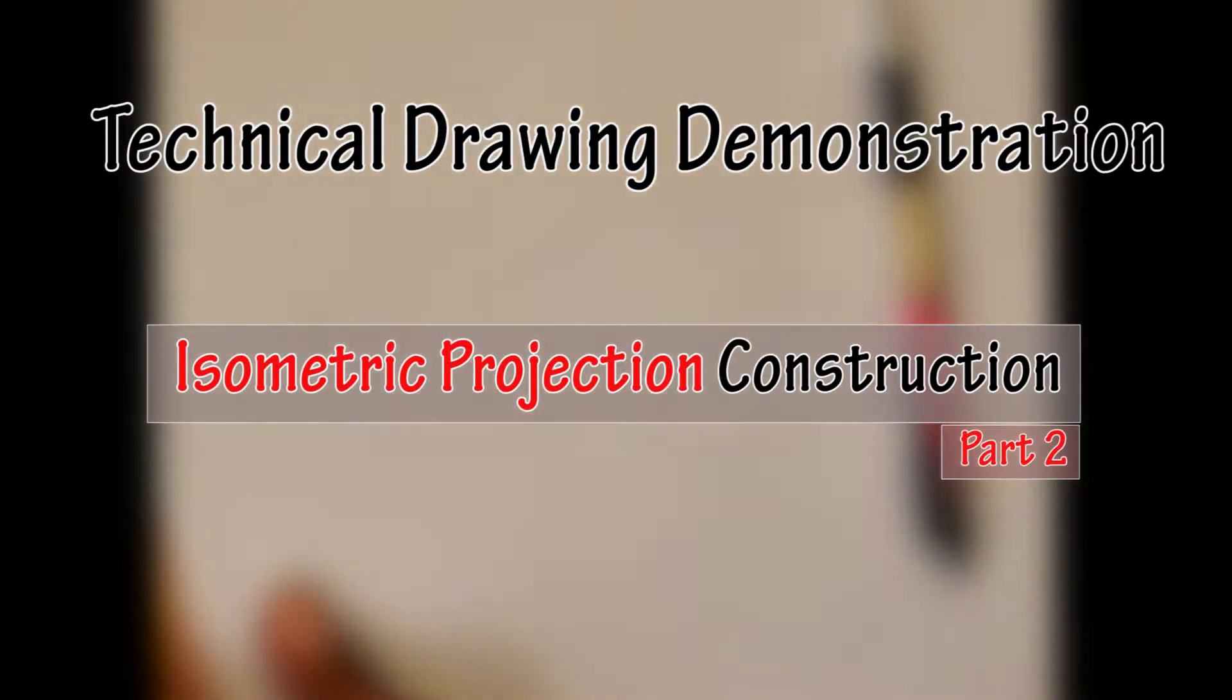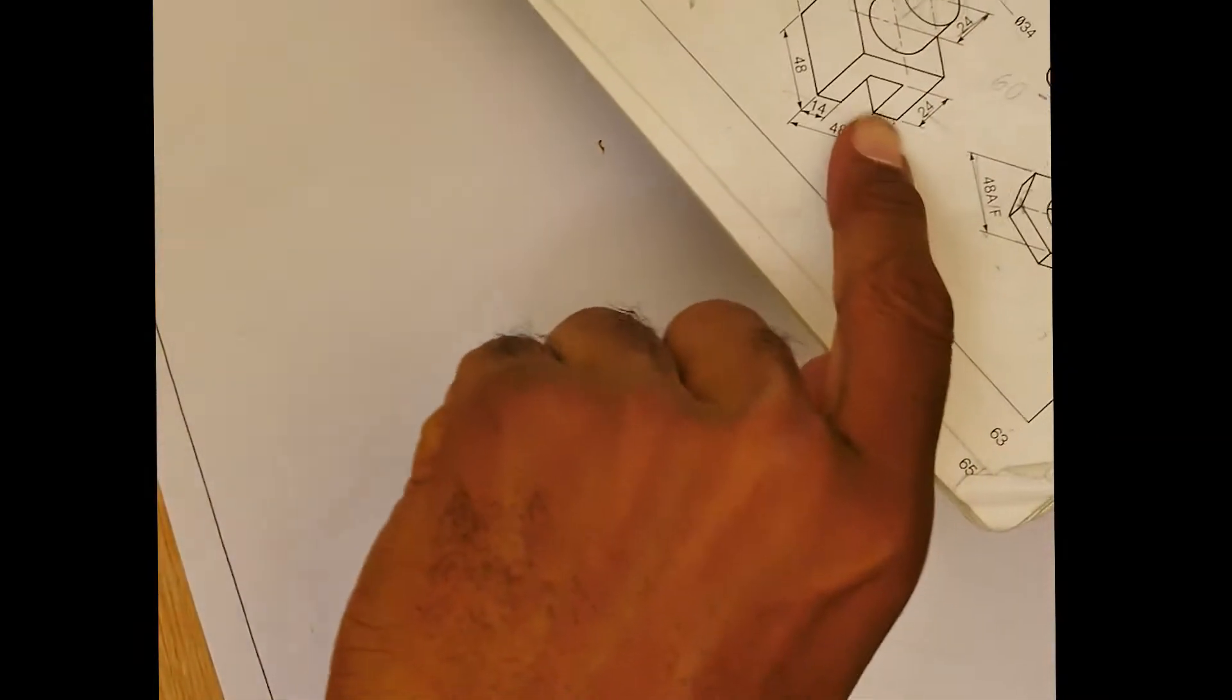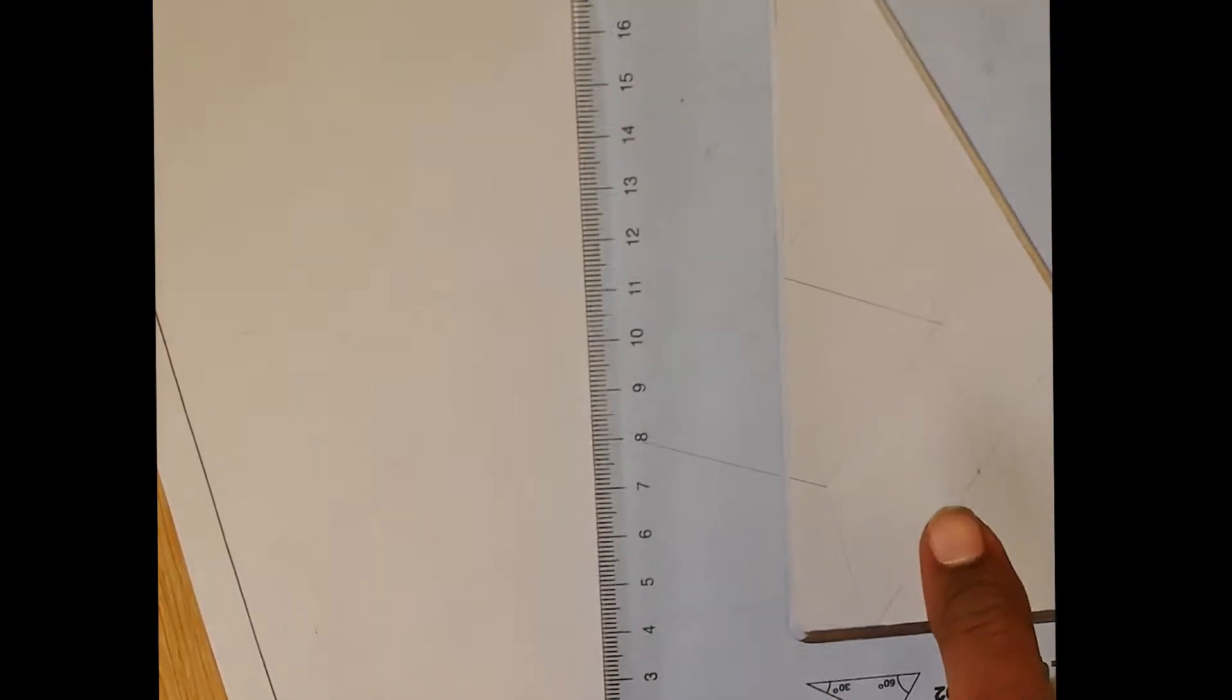Okay guys, today we're going to be going through isometric projection and I'm going to be creating this isometric join here which consists of a cube and a cylinder on top of it. For this we need a 60-30 set square and pencils.